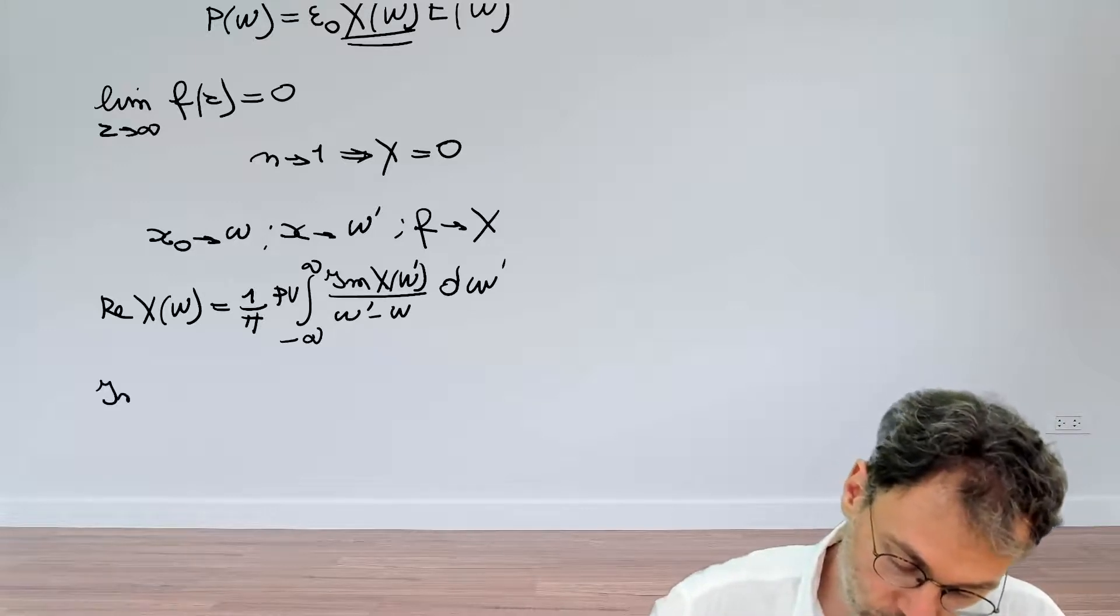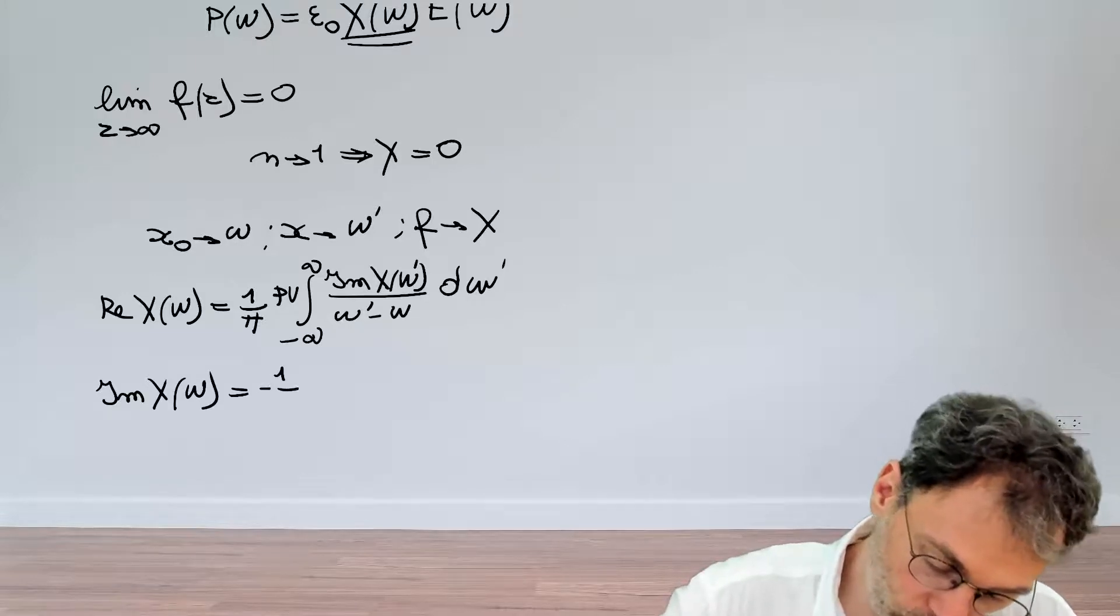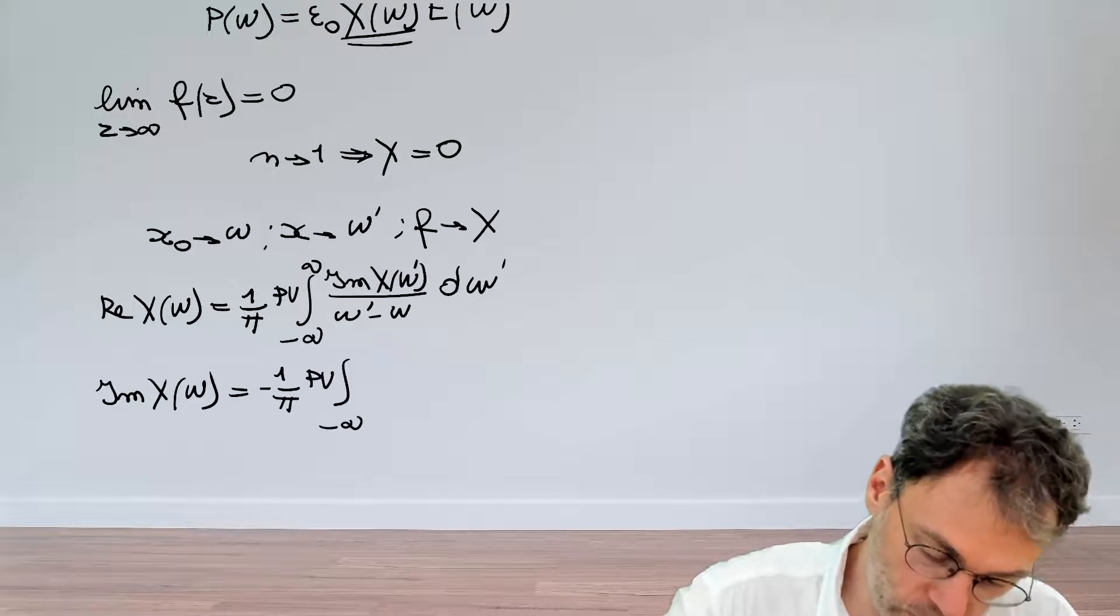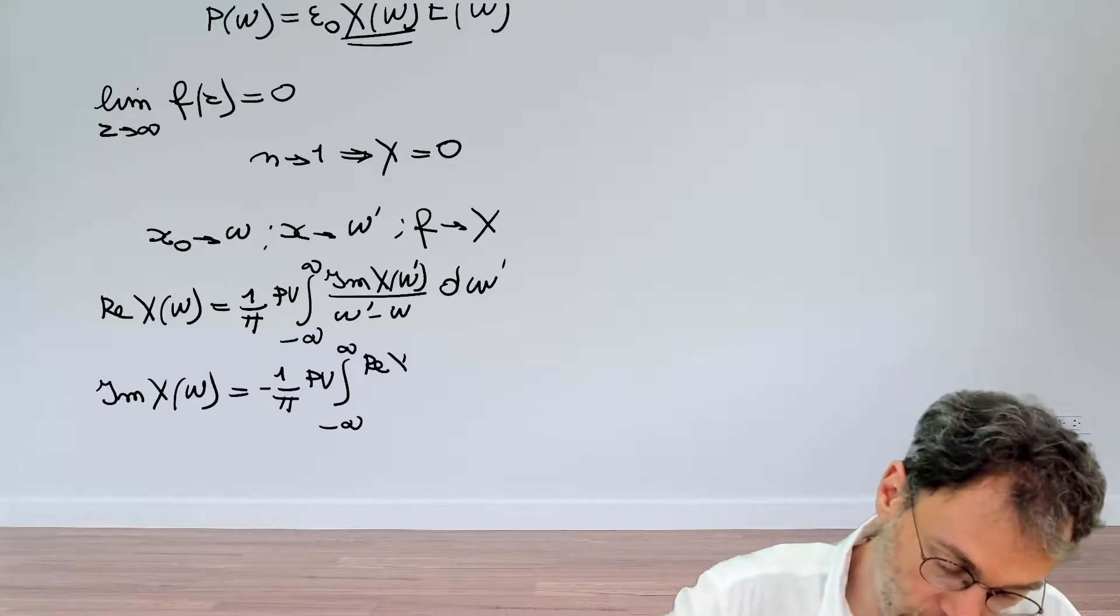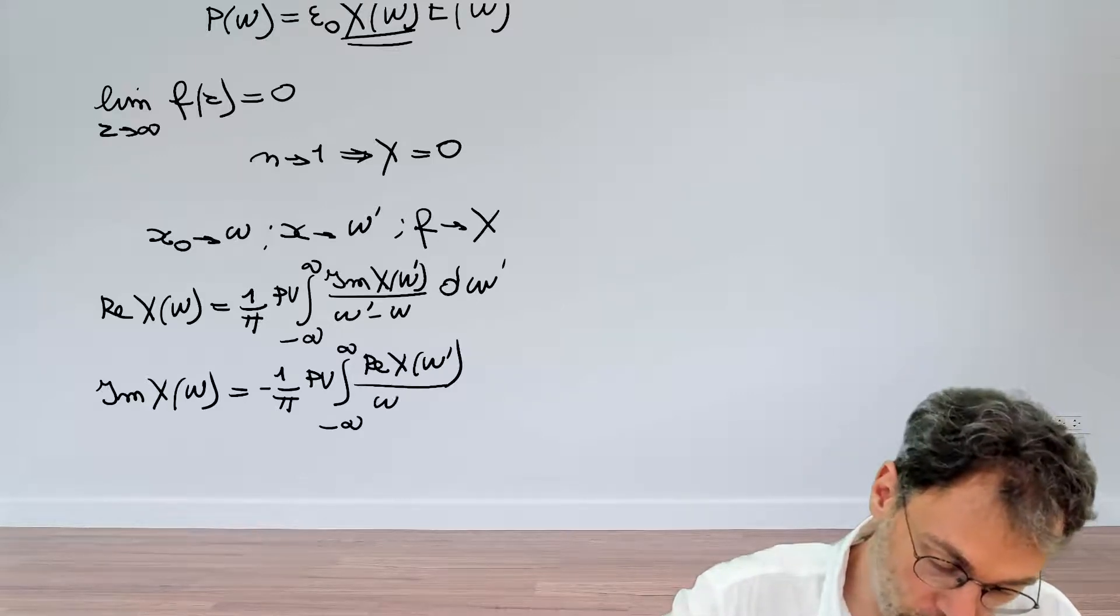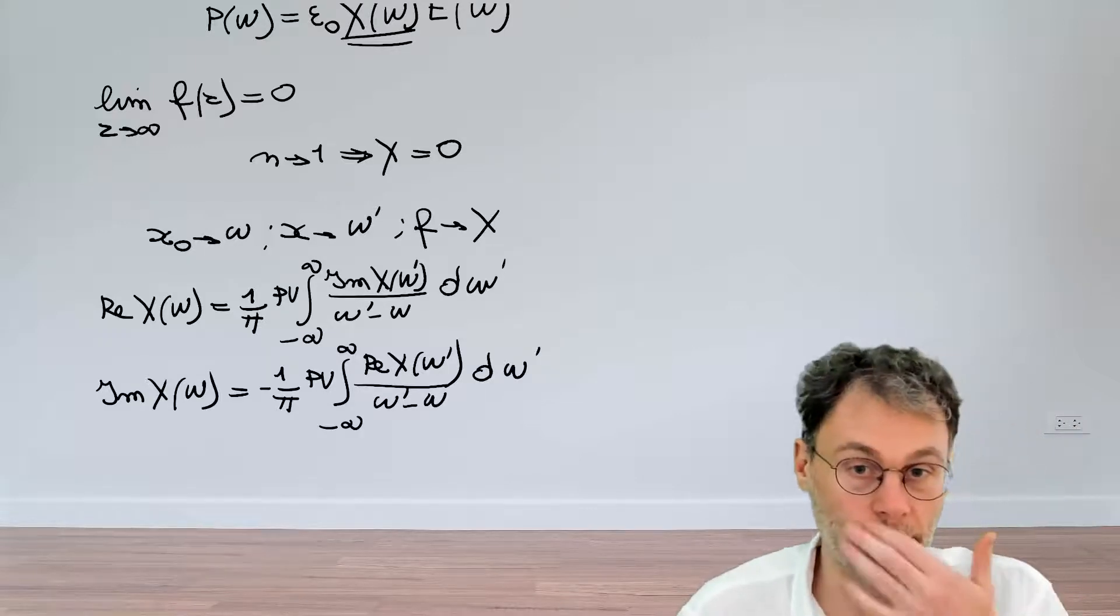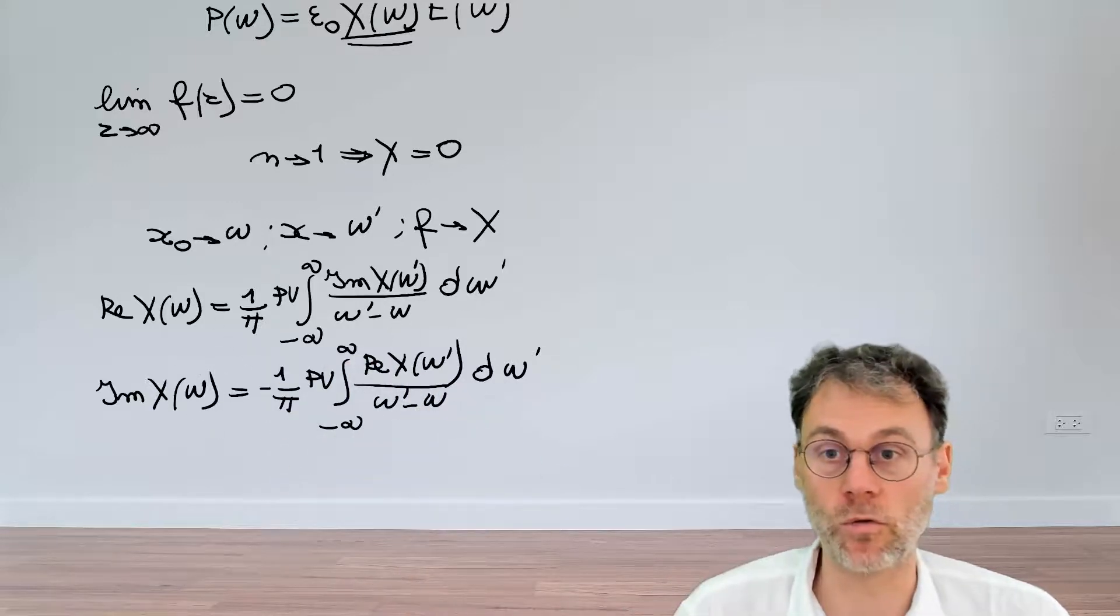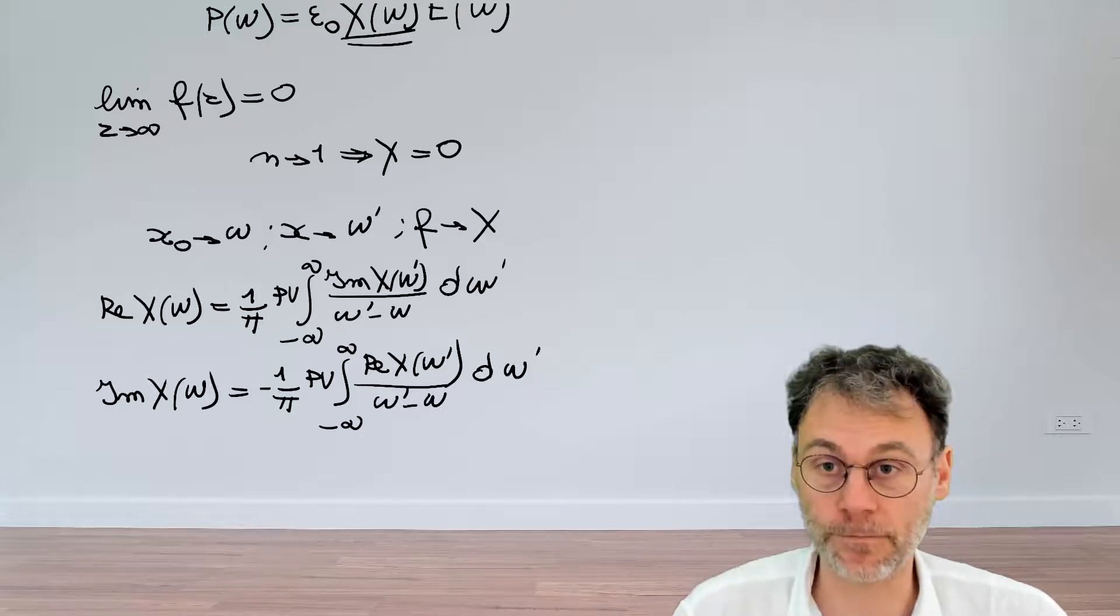And then a very similar relationship with the imaginary part here. So we have minus 1 over π, the principal value integral minus infinity to plus infinity, in this case it's an integral over the real part of the susceptibility divided again by omega prime minus omega, d omega prime. So these are the Kramers-Kronig relationships as applied to photonics for this particular choice of our function f of z.